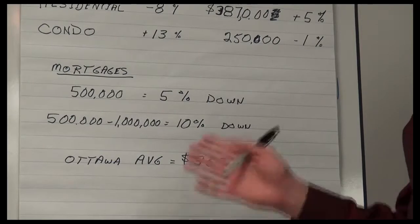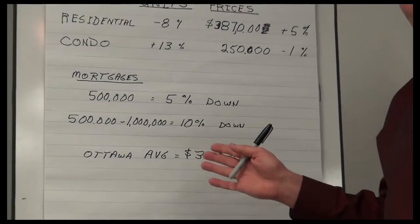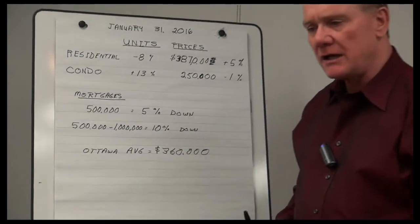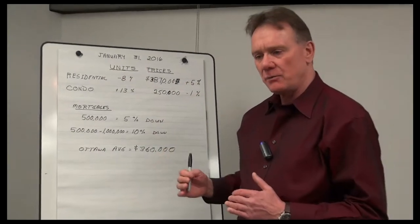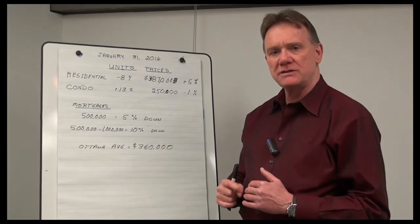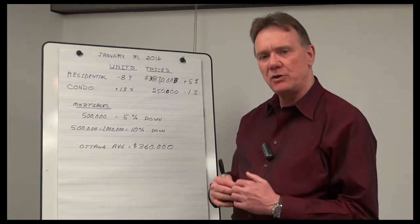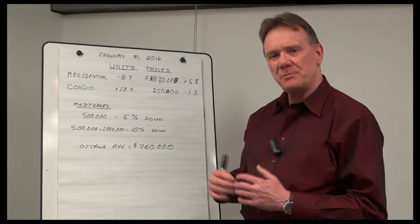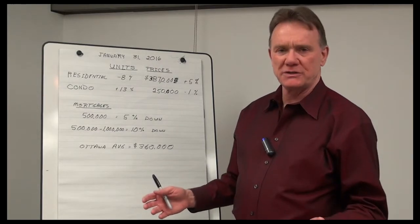Now, the whole purpose of this is the federal government trying to slow down, without scaring anybody, slow down the market in the areas where it is considered to be overheated, maybe going towards a bubble, and they don't want that bubble to burst, and what we're talking about is Vancouver and Toronto.